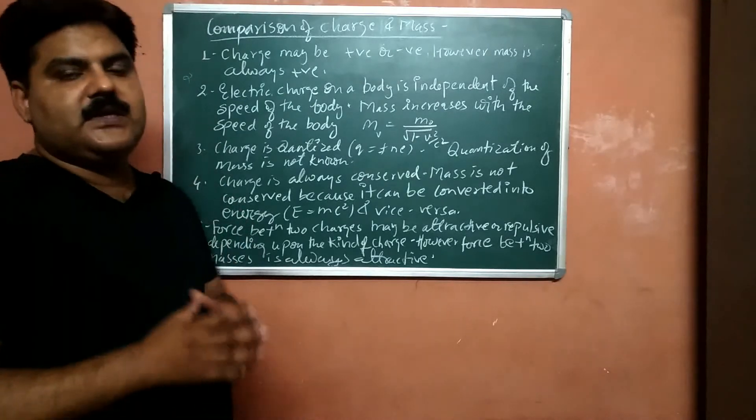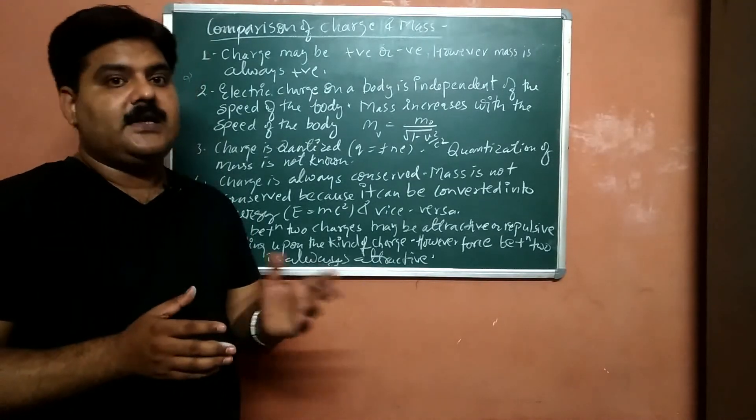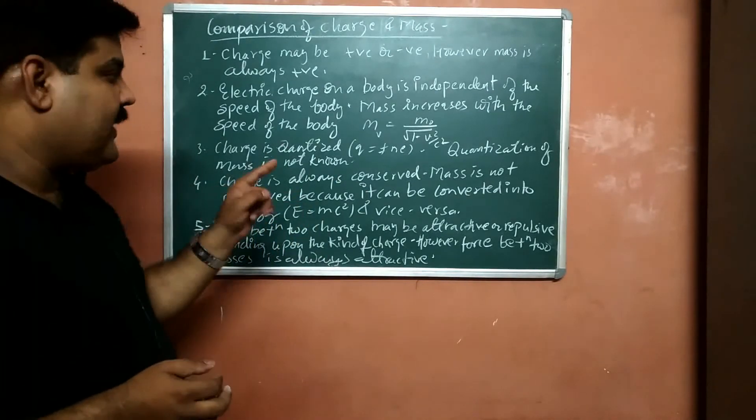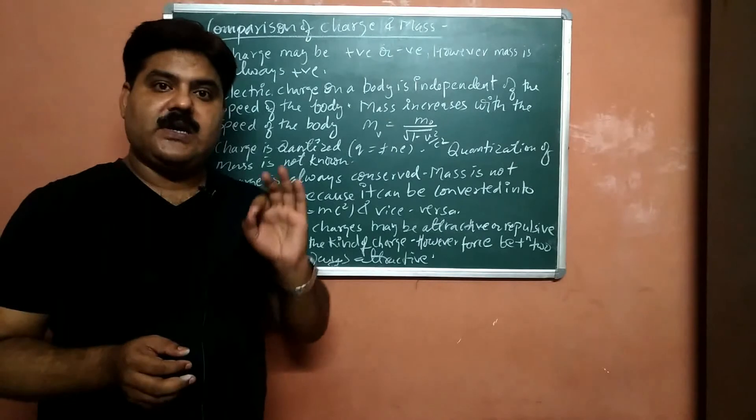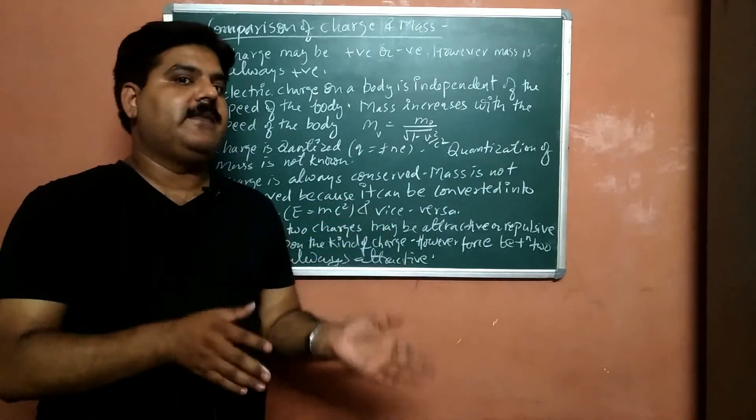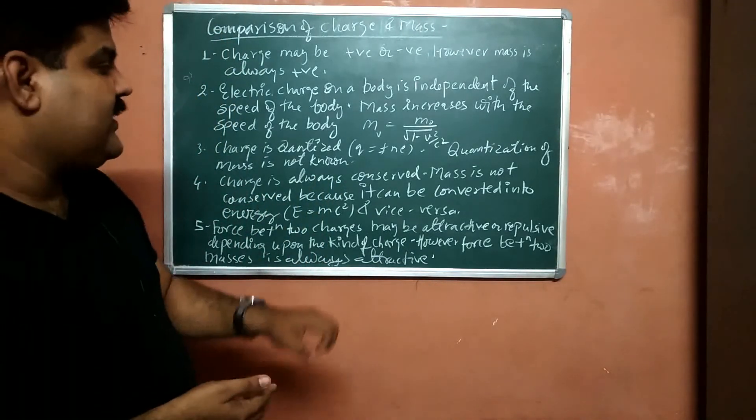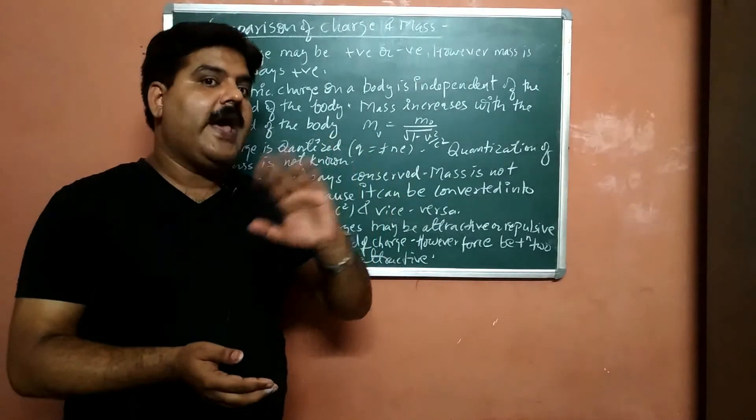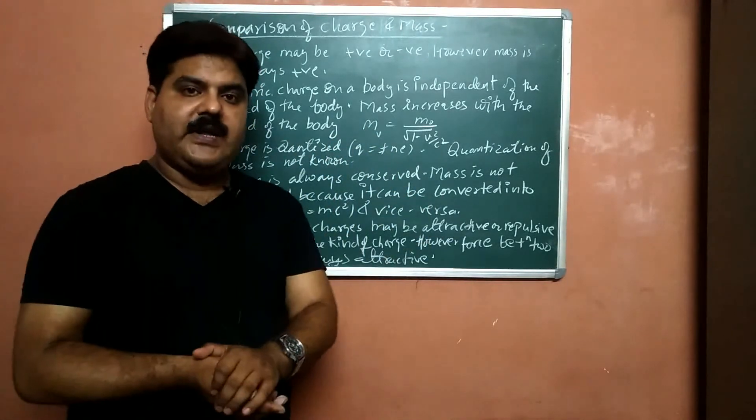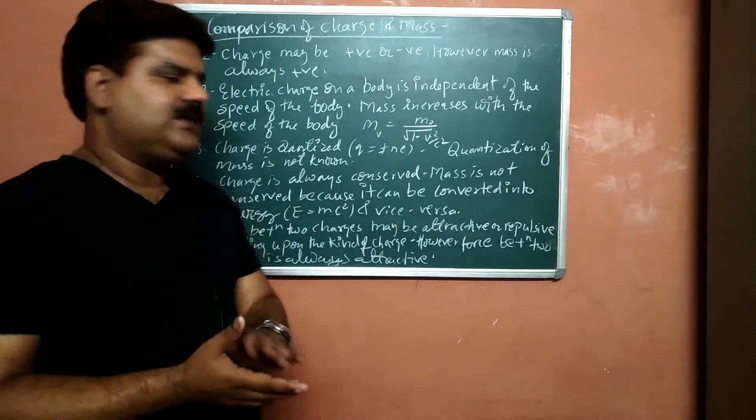Fourth one is, the charge is always conserved. Charge is never lost. In turn, the mass is not conserved quantity because mass can be converted into energy and energy can be converted into mass. A very famous Einstein relativistic relationship E equals mc square. With the help of that, mass can be converted into energy and energy can be converted into mass and vice versa.